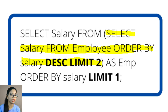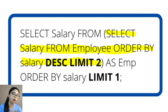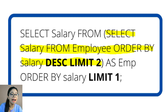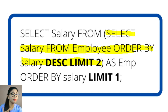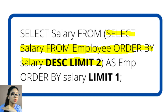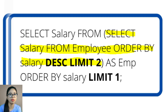The inner query gives two records: 7k and 5k, because LIMIT 2. Now the outer query selects salary from that result with LIMIT 1. Since no ORDER BY is specified in the outer query, it defaults to ascending order — so 5k comes before 7k. With LIMIT 1, the outer query returns 5k. That is the second highest salary using MySQL's LIMIT approach.